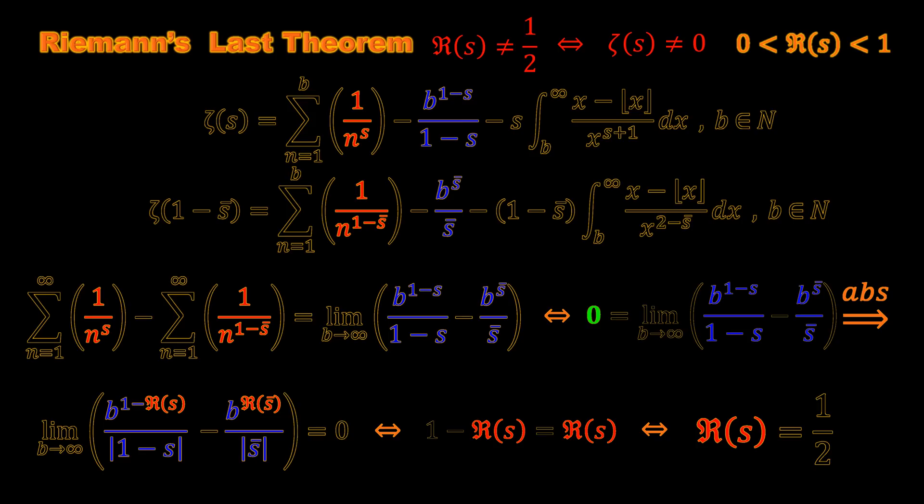Therefore we obtain real part of s equals one-half. If the real part of s is not equal to one-half, we can say one minus real part of s cannot be equal to real part of s.